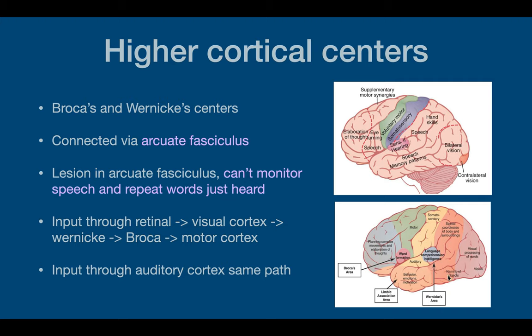There is the limbic association area, which we've gone through before — that's behaviors, emotions, and motivation. Then there's the naming of objects, which is involved in recognition of the object, realizing what it's used for, and what it's called. There's also spatial coordination, which involves proprioception, and the visual processing of words — so this isn't just bilateral vision.